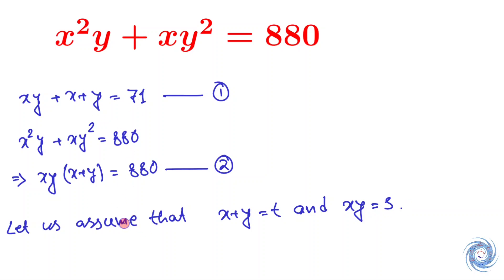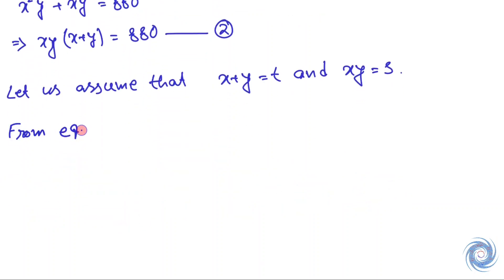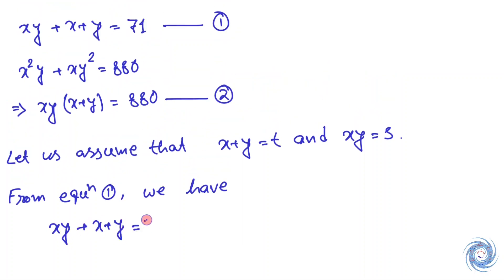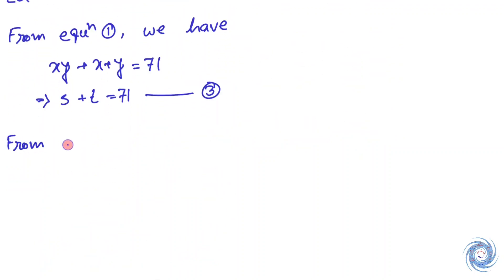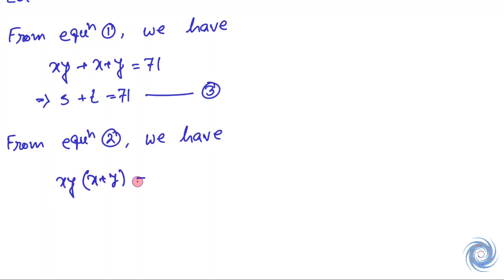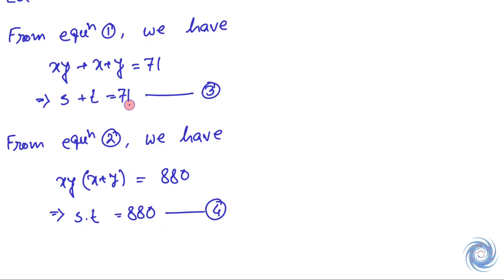From equation 1 we can rewrite it in terms of s and t, giving us equation 3. From equation 2, x²y + xy² = xy(x + y) = s·t, which gives us equation 4. So we have s + t = 71 and s·t = 880.